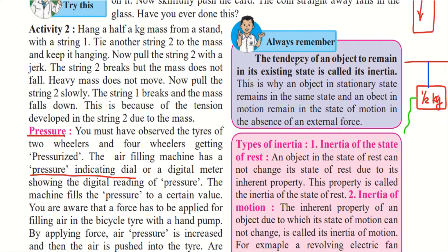Always remember, the tendency of an object to remain in its existing state is called its inertia. This is basically the same definition of inertia we learned earlier — whatever state the object is in, it will continue to remain in that state. This existing state could be when the body is in motion or at rest.